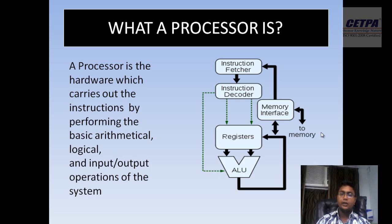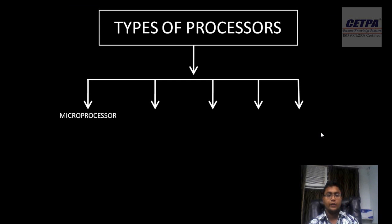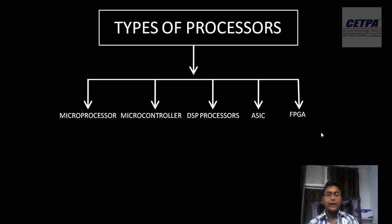The processor is an important part of the embedded system or embedded device. The processor is a device which processes the input and gives the output. If I talk about the types of processors, there are basically five categories: microprocessor, microcontroller, DSP (digital signal processor), ASIC (application-specific integrated circuit), and FPGA (field programmable gate array). In the case of ASIC or FPGA, both of these work only with a hardware description language, through which we can program any ASIC or FPGA circuit.